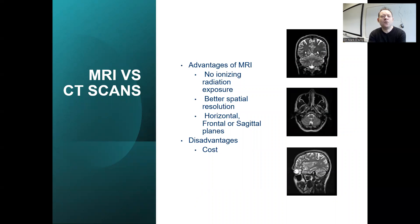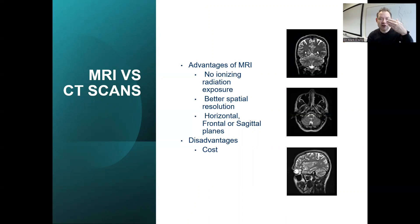Comparing MRI with CT scans: the advantages of MRI include no ionizing radiation exposure, which is a big advantage in terms of safety, and better spatial resolution. You can view horizontal, frontal, or sagittal planes, meaning you can look at the brain from pretty much any angle. The main disadvantage is cost — MRI scanners are very expensive.